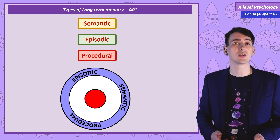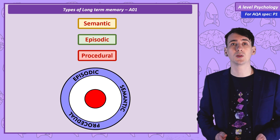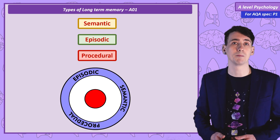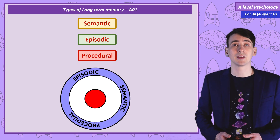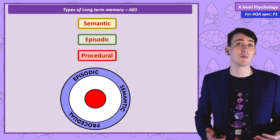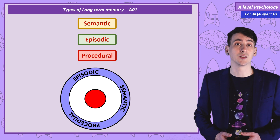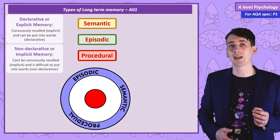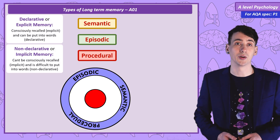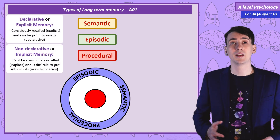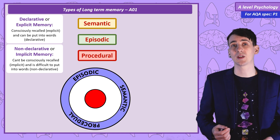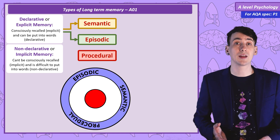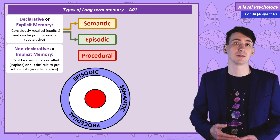The first distinction I want to make between the different types of long-term memory is whether we can put the memory into words — that is, if the type of long-term memory is declarative or not. Now with two types, episodic and semantic, we would say they're declarative.